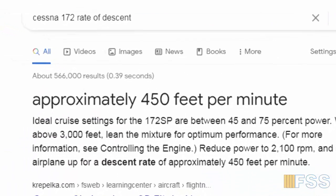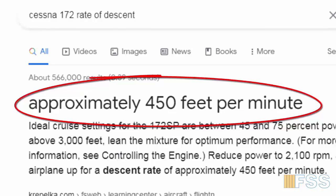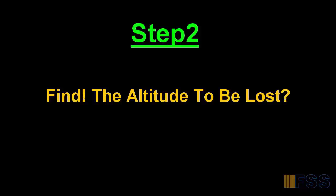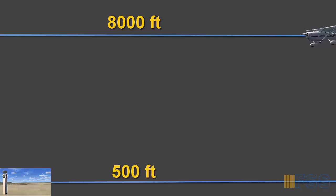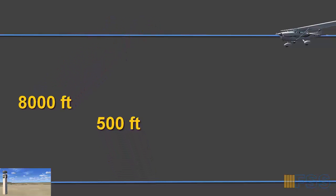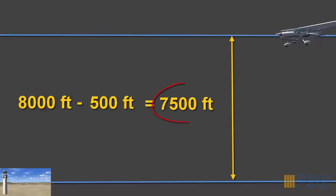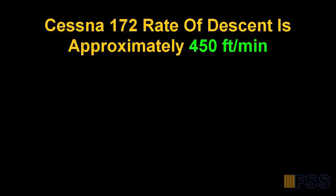As you can see in my search result, the Cessna 172 rate of descent is approximately 450 feet per minute. The second step is to calculate the altitude to be lost. For instance, if we are flying at 8,000 feet and want to descend to 500 feet MSL — our airport destination elevation — the altitude to be lost would be 8,000 minus 500, which equals 7,500 feet.